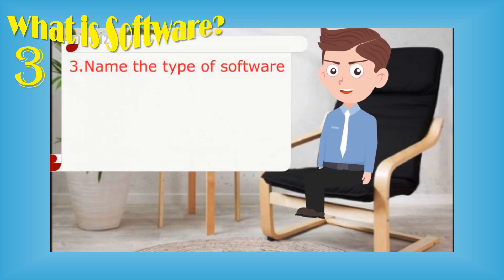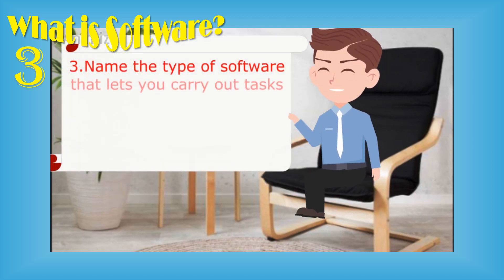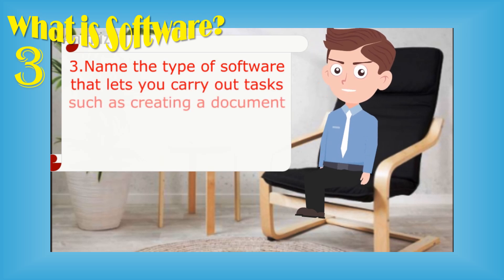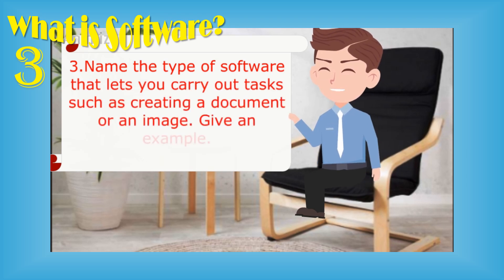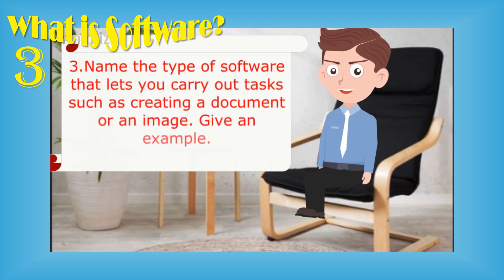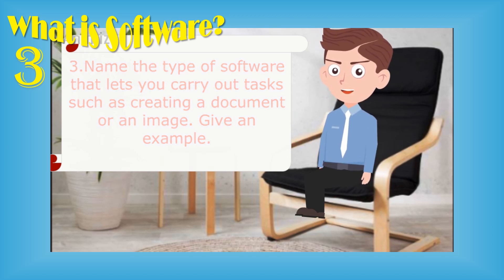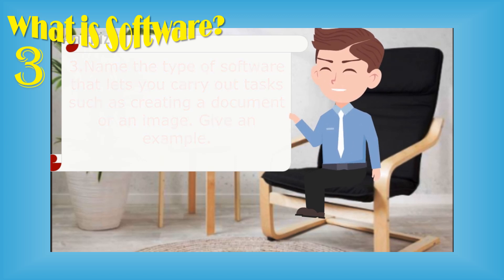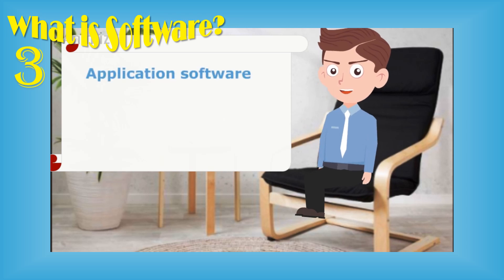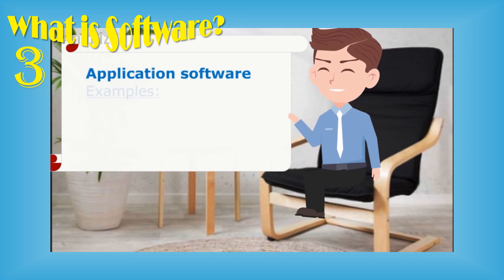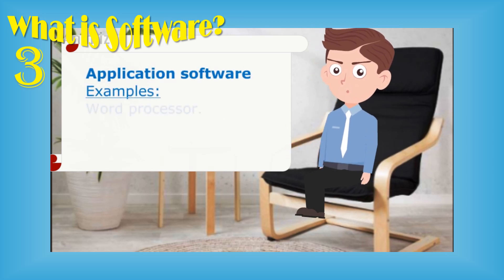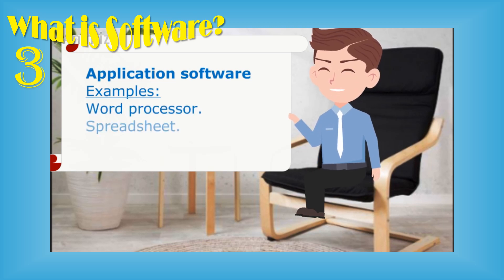Question number three: name the type of software that lets you carry out tasks such as creating a document or an image, and give an example. The answer is application software. Examples include word processor, spreadsheet, and database.